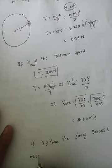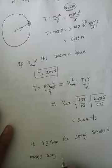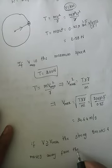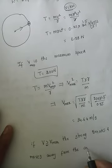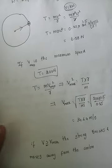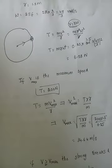If we are rotating at greater than v_max, the string breaks and the stone moves away from the centre because the centrifugal force comes into existence, breaks the string, and the stone moves away from the centre. This is the tension and centrifugal force problem.